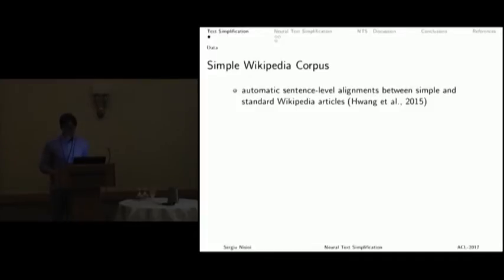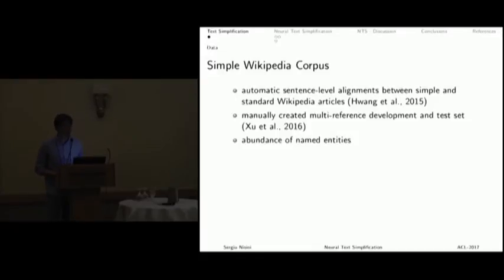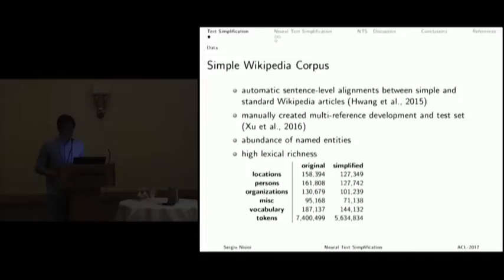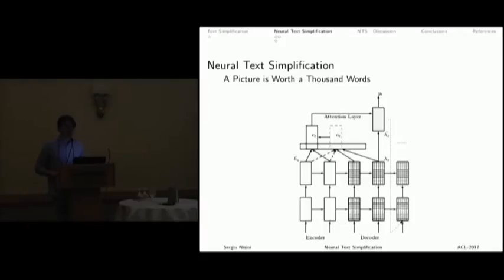In this paper, we used a Simple Wikipedia corpus. This is constructed from automatic sentence alignments between normal English Wikipedia and simplified Wikipedia. This dataset contains a multi-reference development and test set created by Xu et al. It also has an abundance of named entities which can produce high lexical richness. The type-token ratio is still in a high value. It's error-prone, but it's large enough to train deep learning models on it.